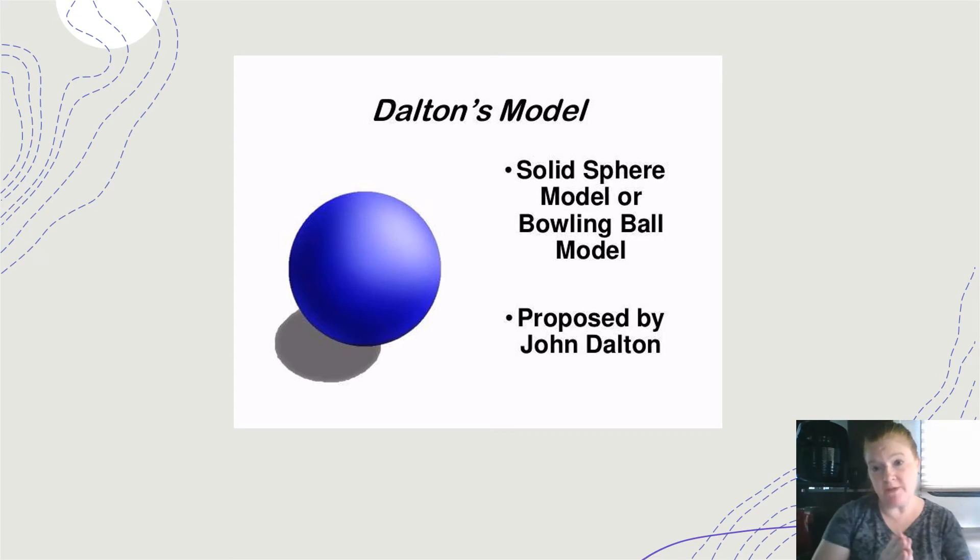And based on those five principles, this is the model of an atom that Dalton proposed. It's a solid sphere, a bowling ball model. Atoms were just little small circles.